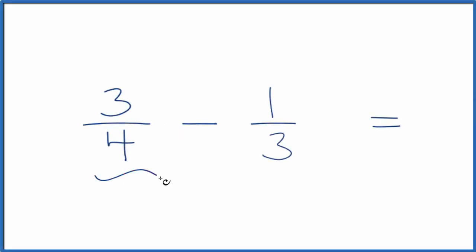Let's subtract the fractions 3/4 minus 1/3. What we're trying to do is we have 3 over 4 minus 1 over 3. We want to know what fraction answer we end up with when we're subtracting or adding fractions.